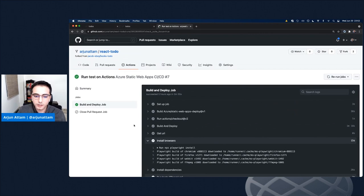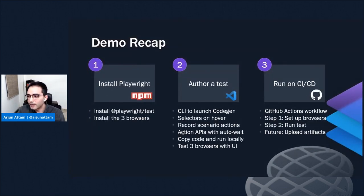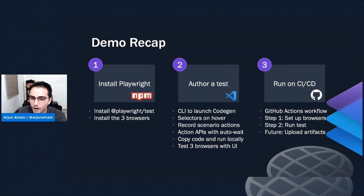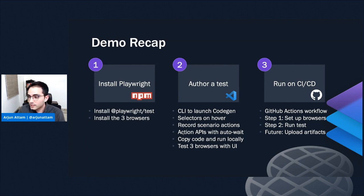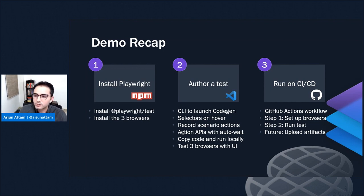In this demo we went through installing Playwright, setting up Playwright in our NPM project, and installing the three browsers. We then switched to authoring the test using CodeGen to get started. Because that's code, we can play with the API and make changes as required depending on our testing criteria. We used APIs that had auto-wait conditions, so we didn't have to worry about sleeping or timeouts that often cause flakiness in automated end-to-end testing. We ran the tests locally across three browsers, then pushed to CI-CD and landed that on our GitHub Actions workflow. In the future we could also upload artifacts — screenshots or videos — for debugging failed tests.